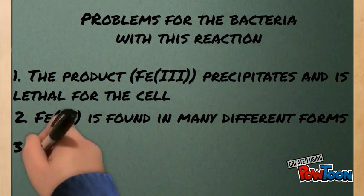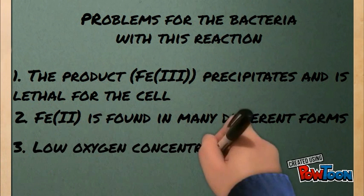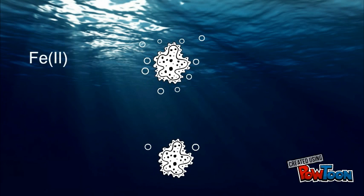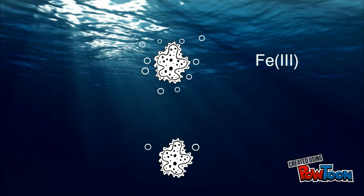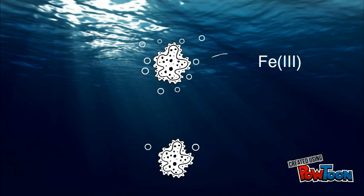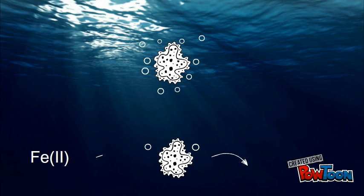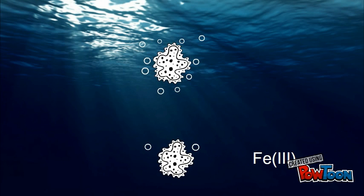The last major problem is the concentration of oxygen. A high concentration of oxygen will result in a super-fast conversion to ferric iron — the reaction is too fast for the organism to obtain the energy gained. When the oxygen concentration is low, this reaction speed is reduced.